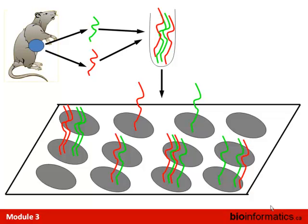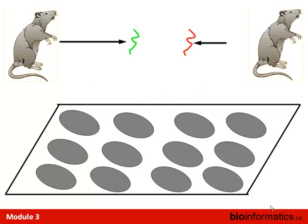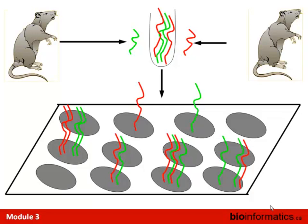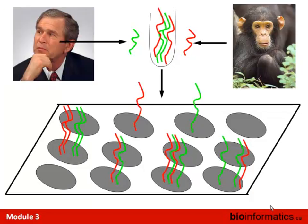You can take samples from different rats and mix them, and this is not limited to rats — you can use different species. One of the major uses of this technology is comparing different species; traditional arrays do a very good job comparing human to primate. Almost every experiment that successfully compared primate gene expression had to use competitive hybridization to account for differences in sequences.